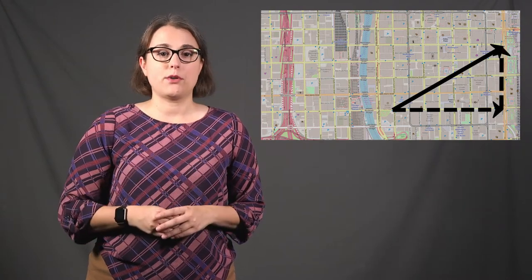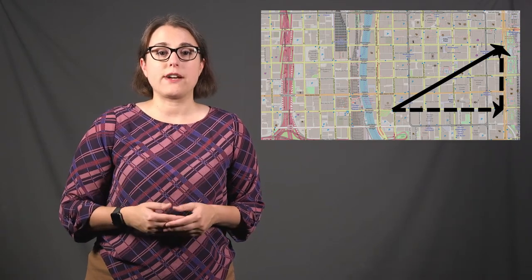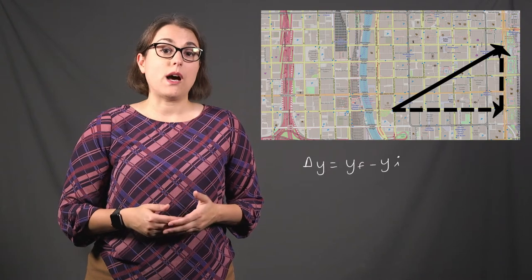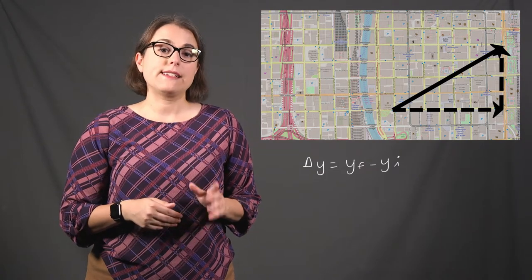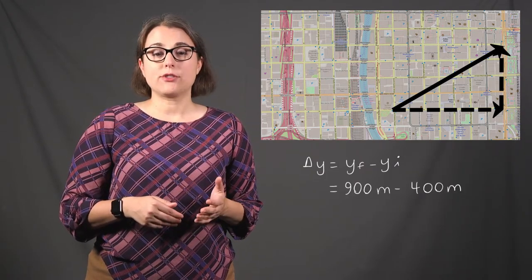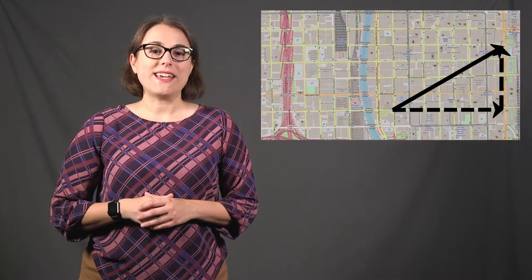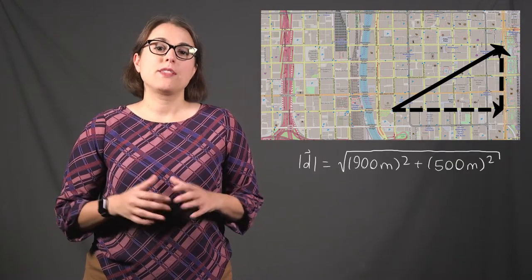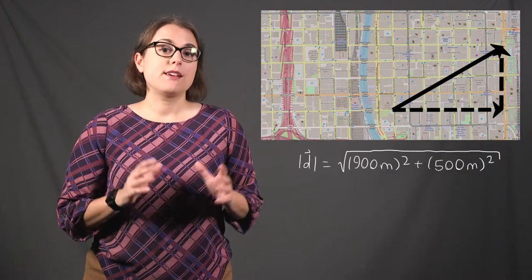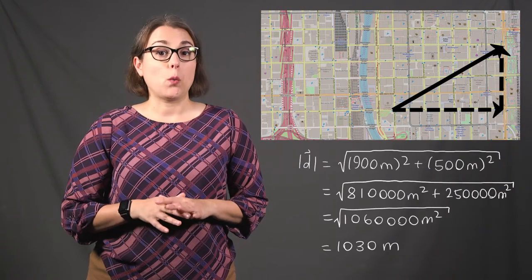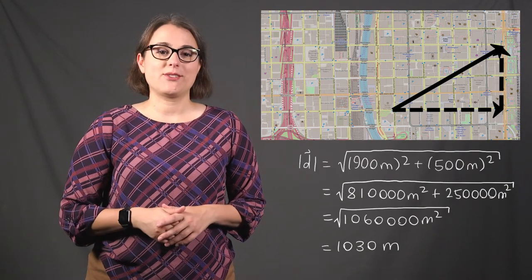We repeat this for the vertical component. Delta y equals the final y position minus the initial y position. In this example, delta y is 900 meters minus 400 meters, which is 500 meters. We can now use the Pythagorean theorem. The magnitude of the vector equals the square root of 900 meters squared plus 500 meters squared, which is equal to 1,030 meters. Therefore, the magnitude of the displacement is 1,030 meters.